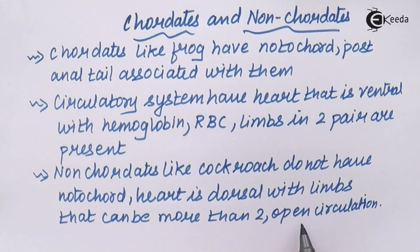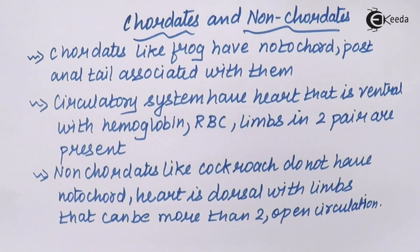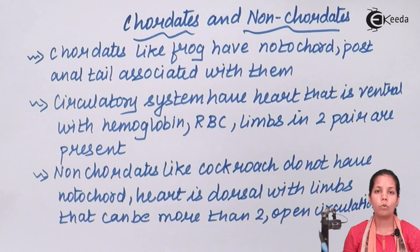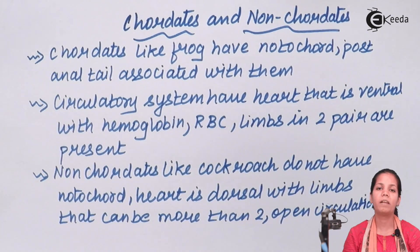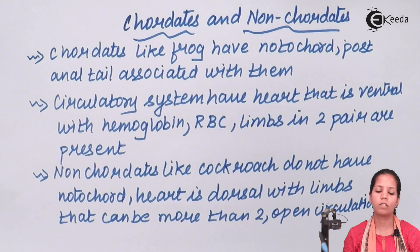In non-chordates, circulation is mostly open type. They do not possess hemoglobin molecules, which is the reason there is no red color to their blood — the blood in cockroaches is white in type. Being an open system, they don't have blood vessels around them; the blood flows through chambers and there is an open circulatory system.